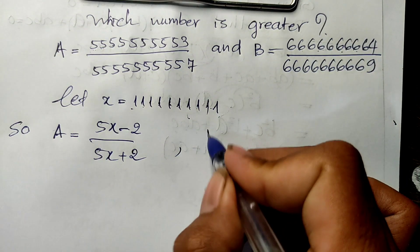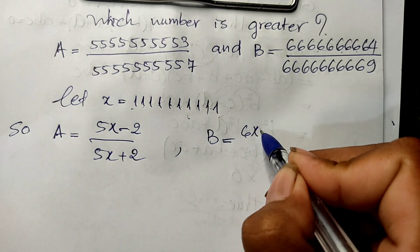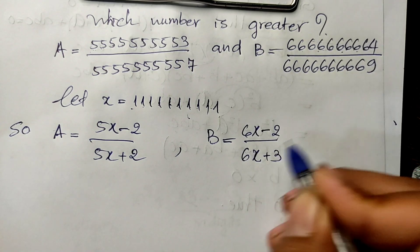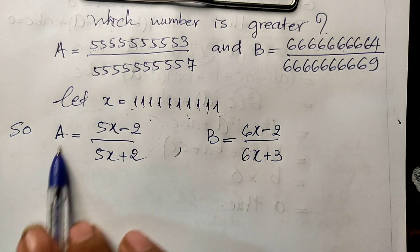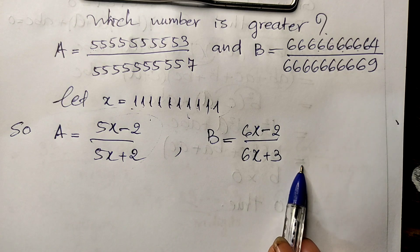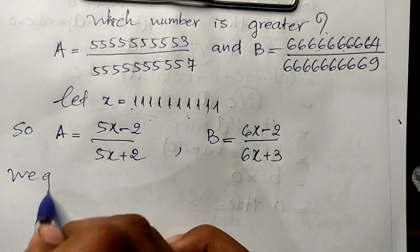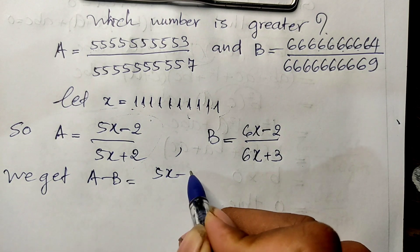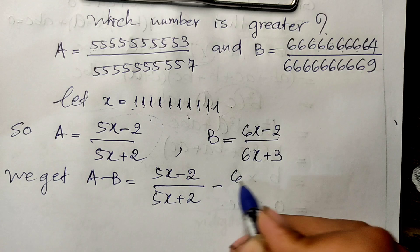So b is equal to 6x minus 2 divided by 6x plus 3. To compare expression a and expression b, I subtract a with b, so we get a minus b equal to 5x minus 2 divided by 5x plus 2, minus 6x minus 2 divided by 6x plus 3.